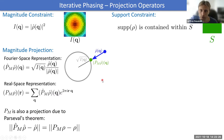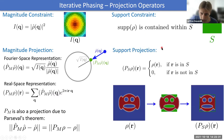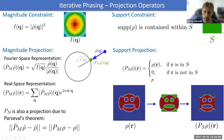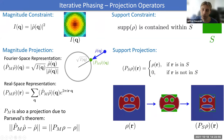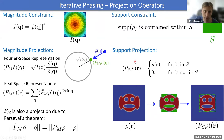The support projection P_S is simple: take density ρ and zero it out everywhere outside the support region S, leaving it unchanged inside. This chops off any density extending beyond the support box, giving the support-projected density P_S(ρ).